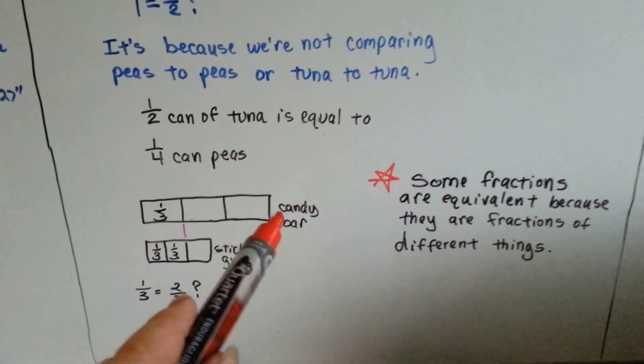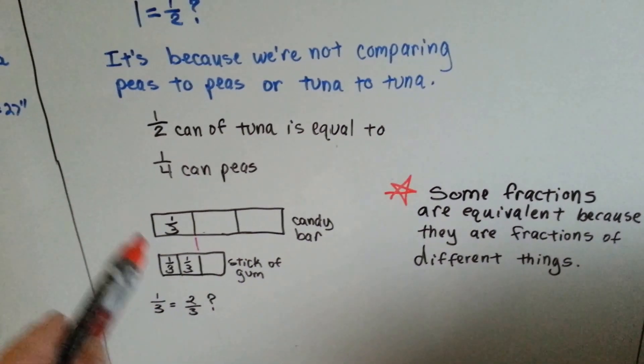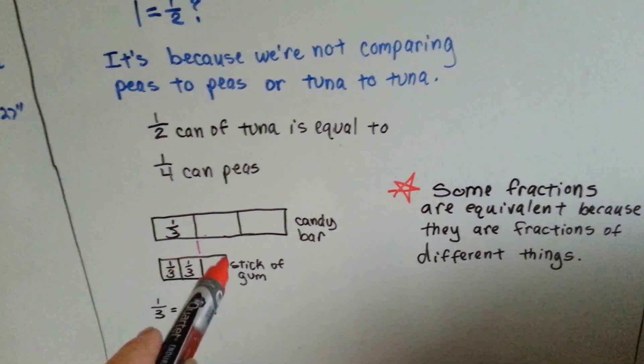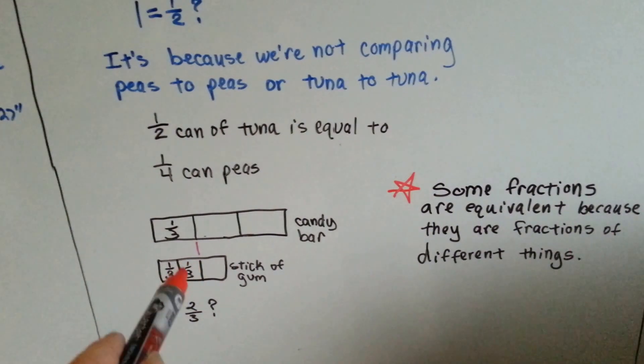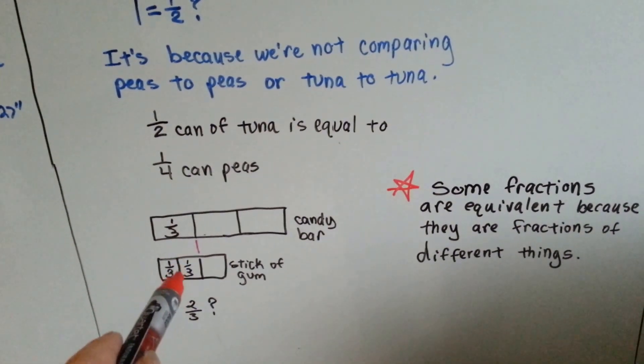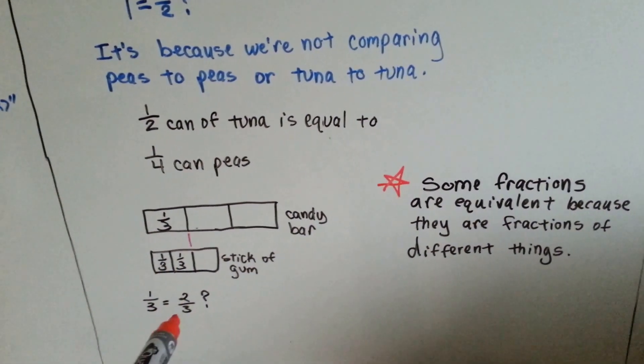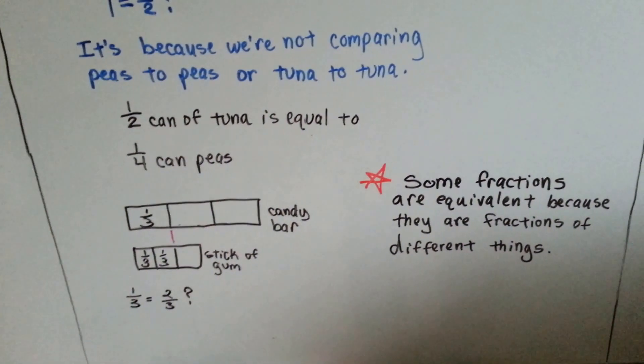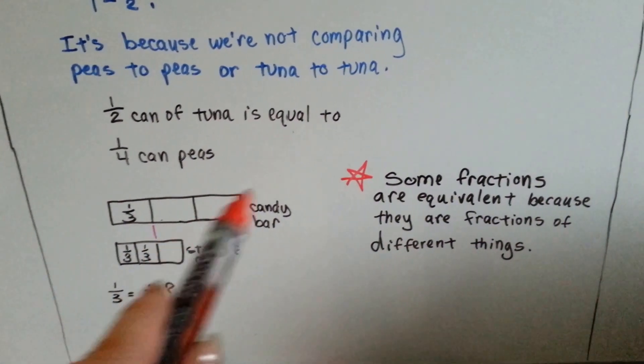If I had a big candy bar and I split it into thirds and I laid it next to a stick of gum and split that into thirds, I could say two-thirds of the gum is equal to a third of the candy bar. How can a third be equal to two-thirds? Because we're not starting with the same thing. We're starting with two completely different things.